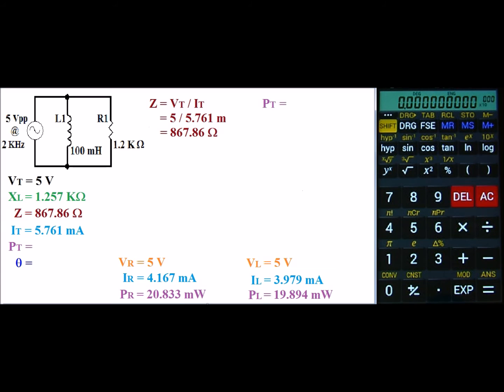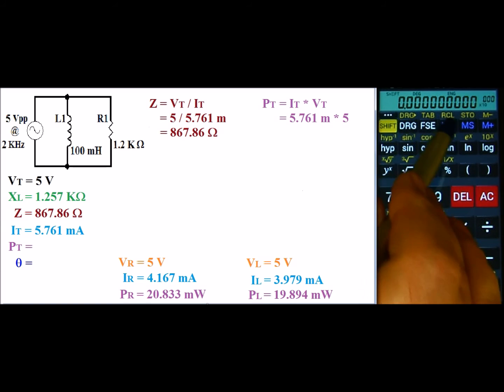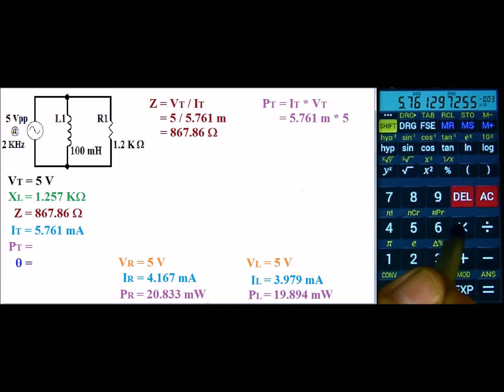Now P total is equal to I total times V total. So that's 5.761 milli times 5. So I'll go ahead and recall my current and then just multiply it times 5. And we get a power of 28.806 milliwatts.